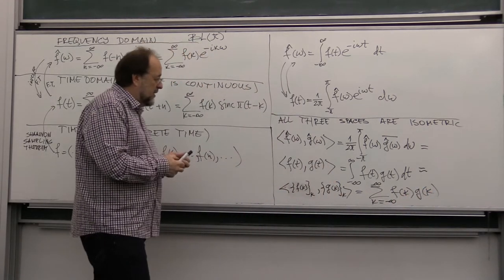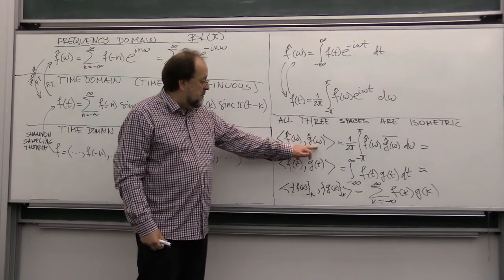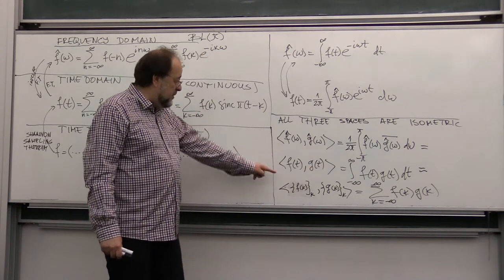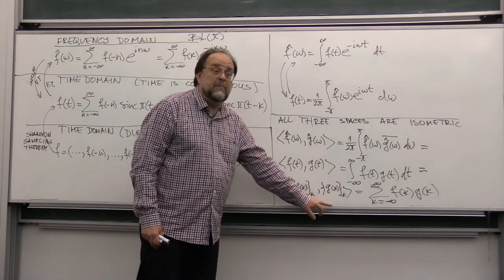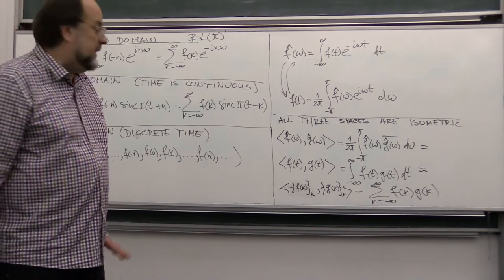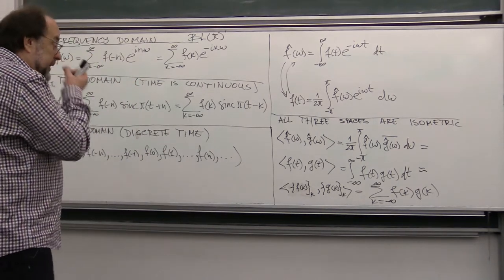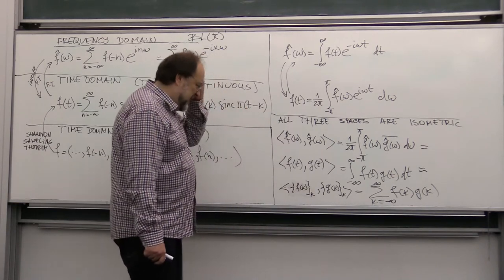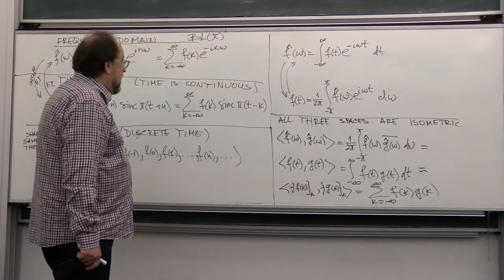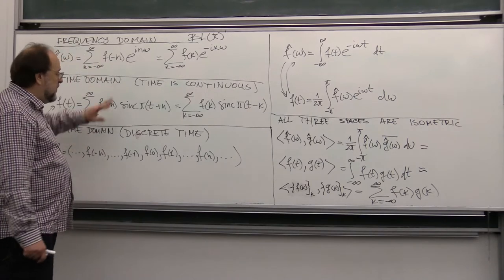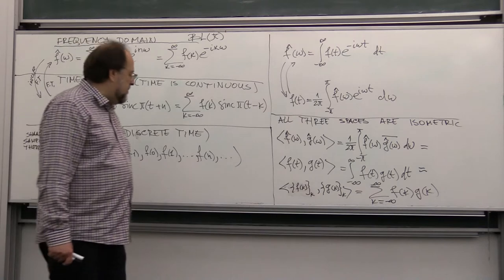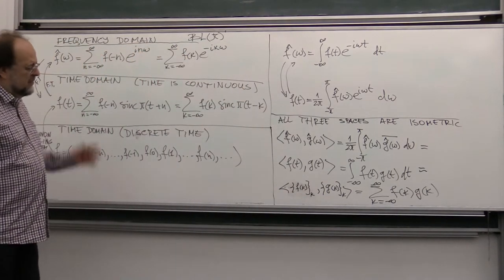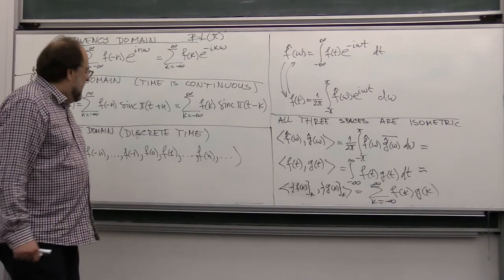So the scalar product of signals represented in the frequency domain is exactly the same as the scalar product of the two signals represented in the time domain, and the same as when signals are represented by discrete samples. This means the lengths of vectors are the same, and the angles between the vectors are also the same. In signal processing, we keep going back and forth between these three representations, but most of the time we operate on discrete samples in the time domain or in the frequency domain.